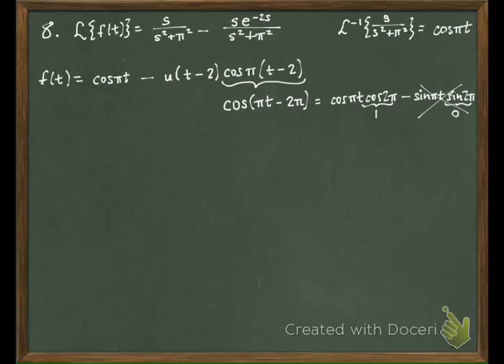So, really, this just boils down to cosine pi t minus u of t minus 2 cosine pi t, right?